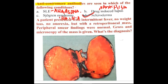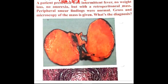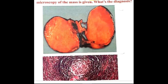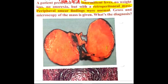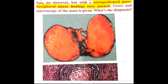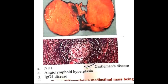The next question: a patient presented with intermittent fever, no weight loss, and no anorexia. There is a retroperitoneal mass and peripheral smear is normal. The gross and microscopic picture of the mass is given. What is the diagnosis? Here you can see a homogeneous mass with some areas — it is a retroperitoneal mass.